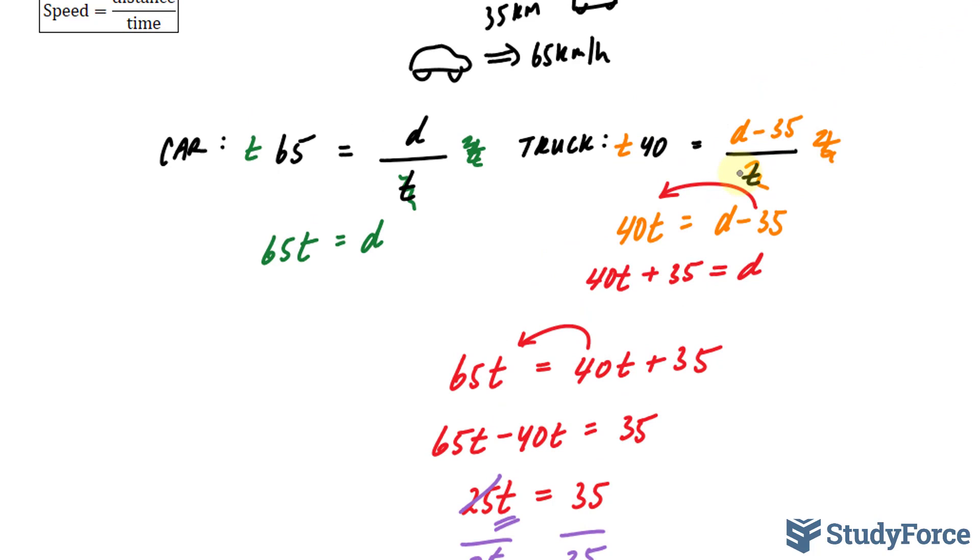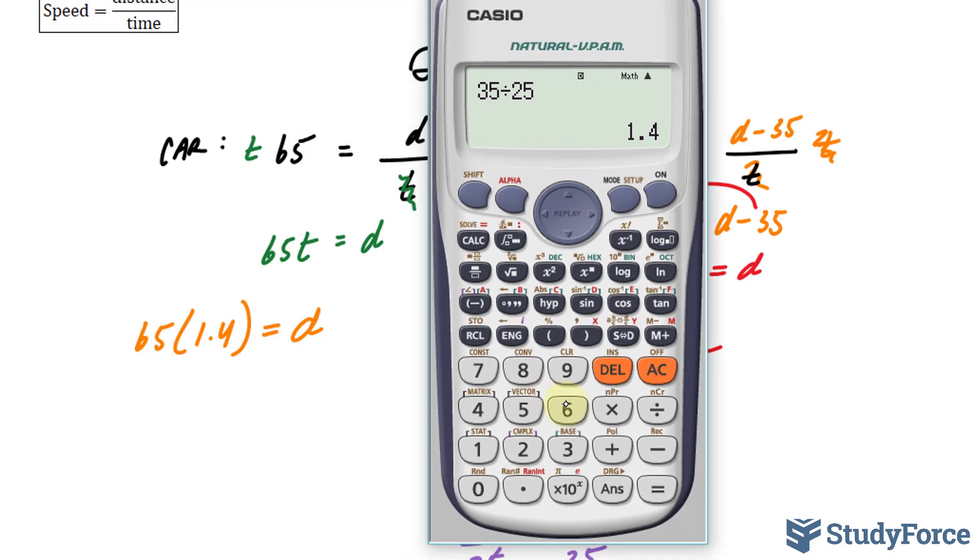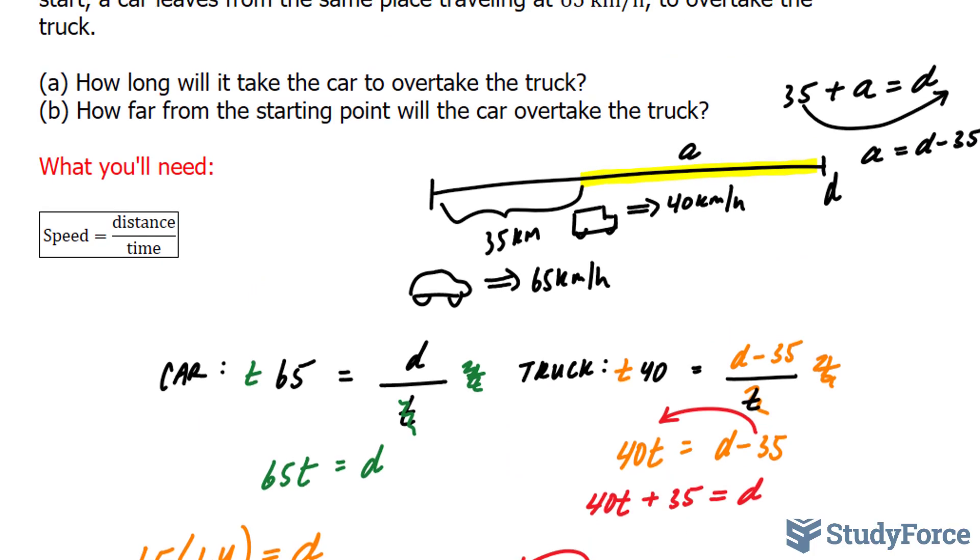65 times 1.4 is equal to D. Using my calculator, 65 times 1.4 gives me 91. 91 kilometers where these two will meet.